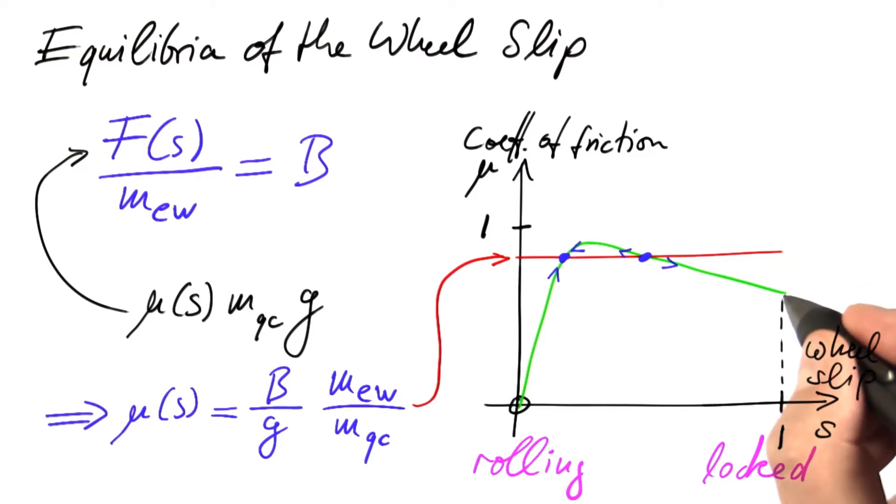And strictly speaking, there is a third equilibrium, which is stable again. When the wheel slip is one, that means when the wheel is locked, the deceleration by the brake always supersedes the force applied through friction. We are going to stay in that locked state.